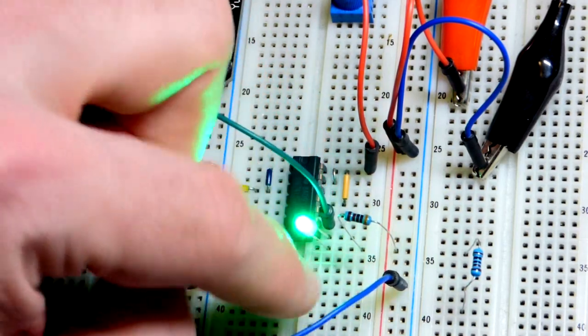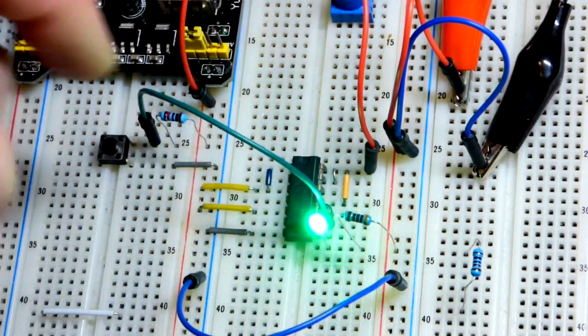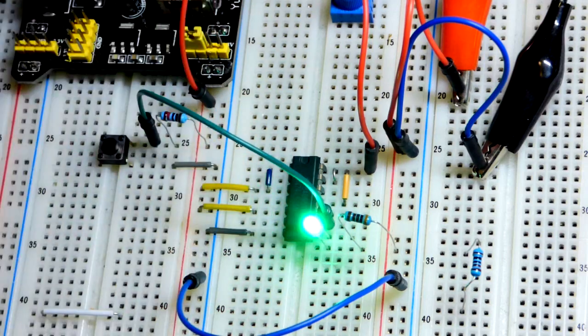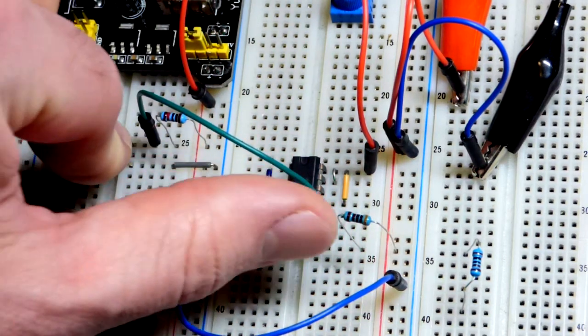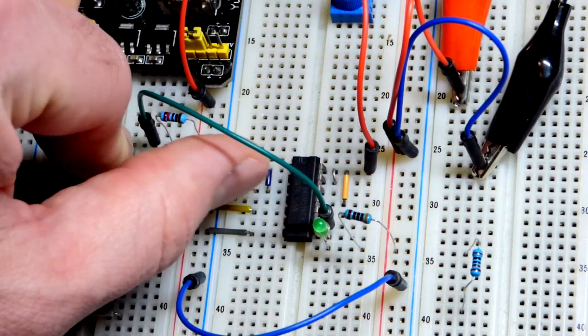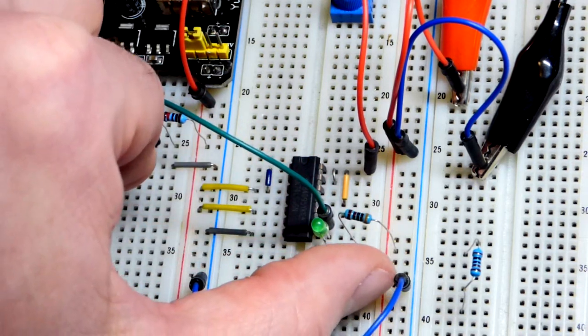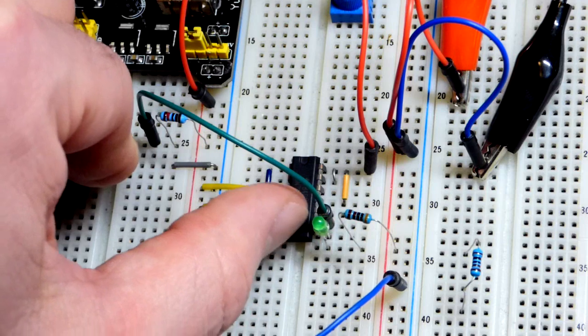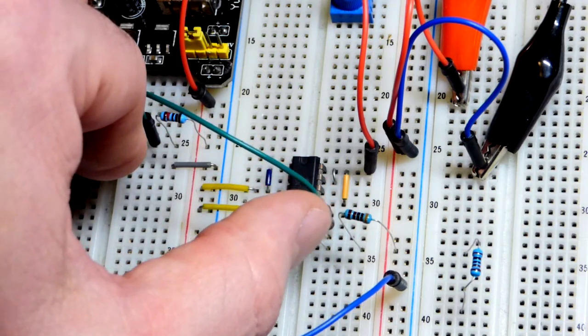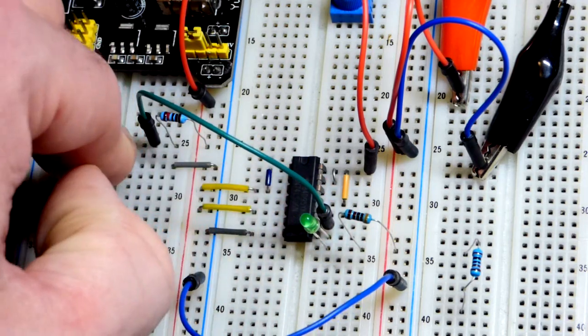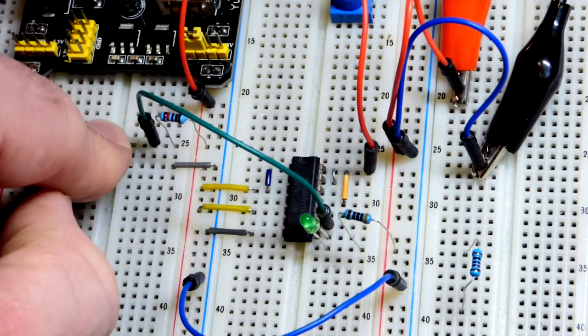So now it's low because we got a current path there from positive. Make sure you put the LED in the right way. Long lead the anode to positive. Short lead to the output there. And then when we hit this button, basically it's just like an open switch right now. But we consider that a high output because we have a positive voltage coming that way. So this side of the LED is actually high right now where the output is. It has a voltage across it.